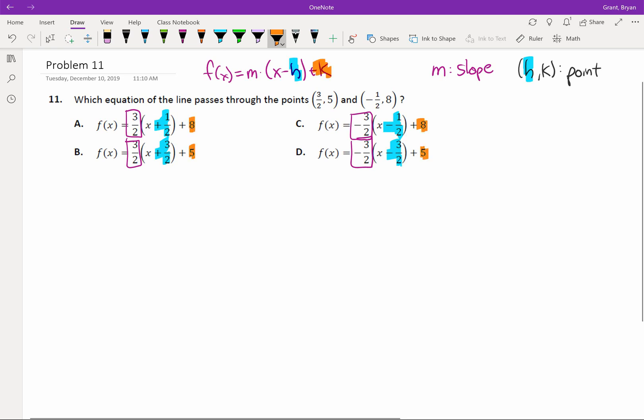And then of course k is going to be our number on the outside. So we are going to use those three components to figure out which line goes through these two points.